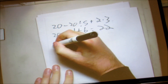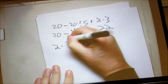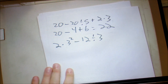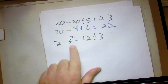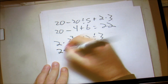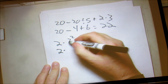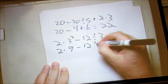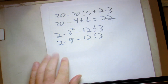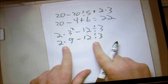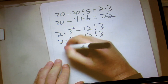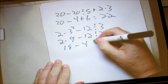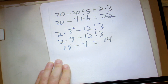Let's say we have 2 times 3 squared minus 12 divided by 3. First we do exponents: 3 squared is 9. So we have 2 times 9 minus 12 divided by 3. Now we do multiplication and division at the same time: 18 minus 4, and that equals 14.